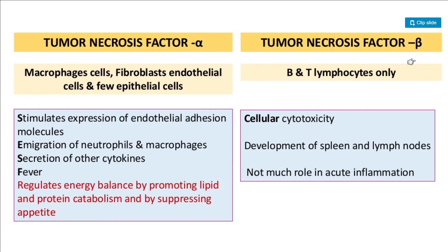Tumor necrosis factor alpha is produced by macrophages, fibroblasts, endothelial cells, and epithelial cells — similar to IL-1 and IL-6. TNF-alpha stimulates expression of endothelial adhesion molecules, promotes immigration of neutrophils and macrophages, stimulates secretion of other cytokines, causes fever, and regulates energy balance by promoting lipid and protein catabolism and suppressing appetite. TNF-beta is involved in cellular toxicity and development of the spleen and lymph nodes, with less role in acute inflammation.